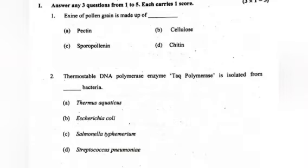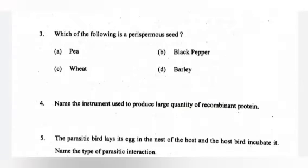Question 2. Thermostable DNA polymerase enzyme TAQ polymerase is isolated from which bacteria? A. Thermus aquaticus, B. Escherichia coli, C. Salmonella typhimurium, D. Streptococcus pneumoniae. Answer: Thermus aquaticus.